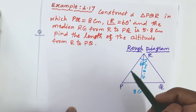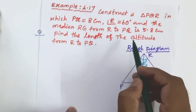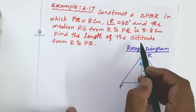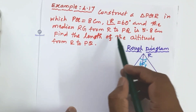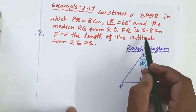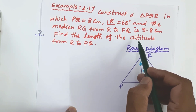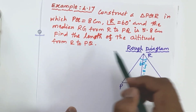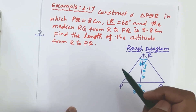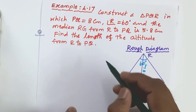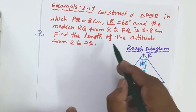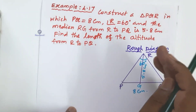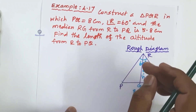The triangle construction will be completed using the median concept. After constructing the triangle, we will find the length of the altitude from R to PQ. So we will do two tasks: the construction, then finding the altitude.